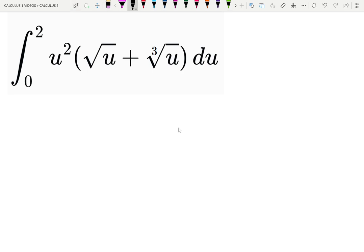Let's integrate from 0 to 2 the function u squared multiplied by the square root of u plus cube root of u.